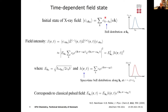To construct a time-dependent field state, we make a wave packet of field states — a coherent superposition of field eigenstates with a Gaussian distribution in energy. The time dependence of the field intensity then becomes a Gaussian function in time, which is the Fourier transform of those coefficients. This purely quantum mechanical field looks very much like the classical pulsed field you would construct classically.